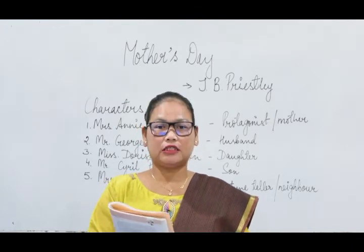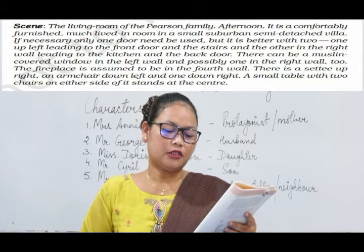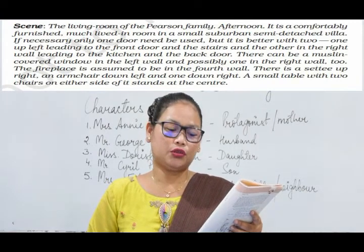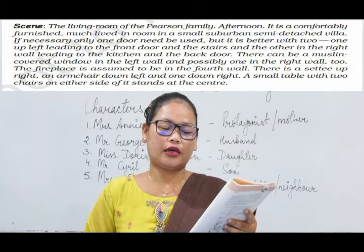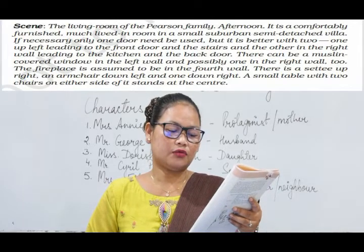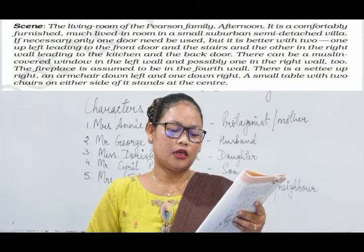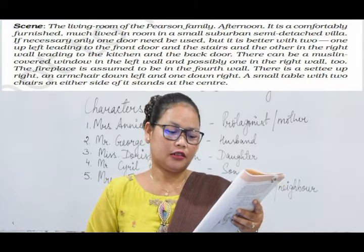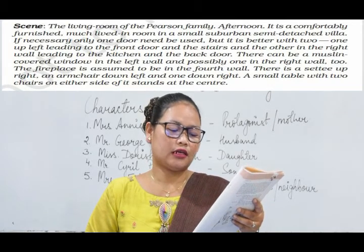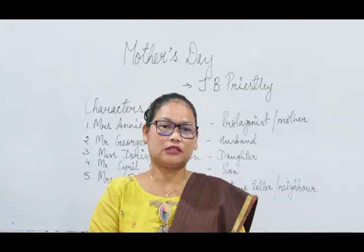The action takes place in the living room of Mrs. Pearson's house in a London suburb. The scene is the living room of the Pearson family, afternoon. It is a comfortably furnished, much lived-in room in a small suburban semi-detached villa. If necessary, only one door need be used, but it is better with two — one up left leading to the front door and stairs, and the other in the right wall leading to the kitchen and the back door. There is a settee up right, an armchair down left and one down right, and a small table with two chairs at the center.